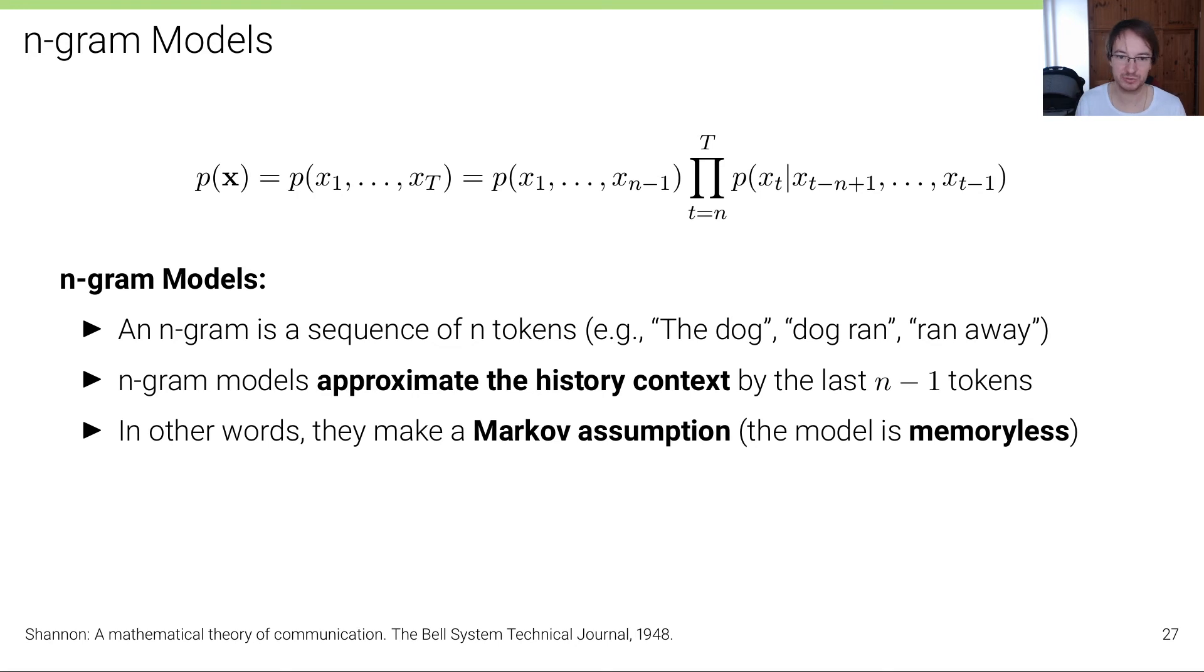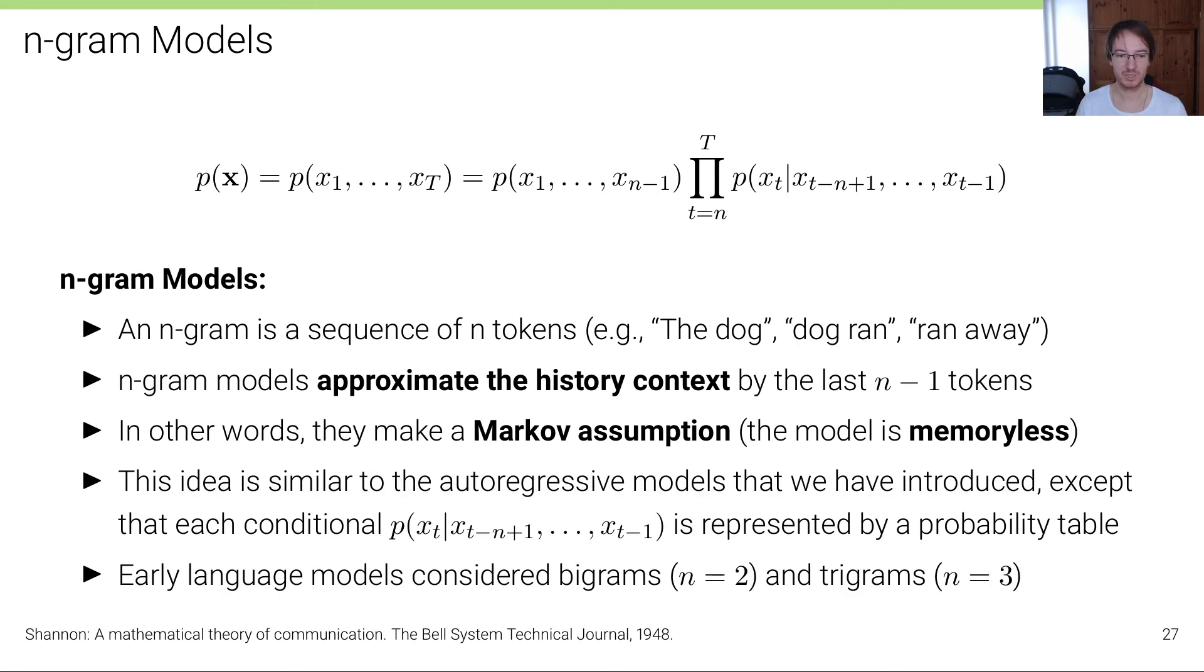We multiply this with these conditional distributions where the history context is cut to the last n minus one tokens. Now this becomes much more tractable, in particular if we consider small n's like n=2, n=3, n=4. These are the typical n-grams considered in the literature. The idea is similar to autoregressive models where we have cut the history, except that each conditional distribution in n-grams is represented by a probability table and not by a neural network.